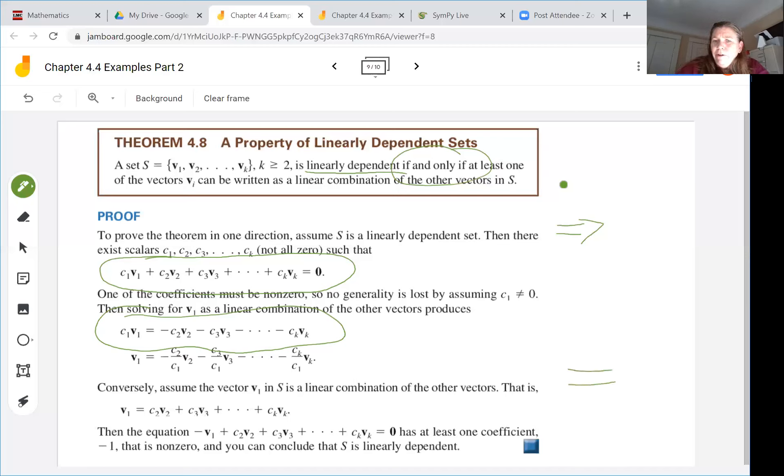So now we're going to go in the other direction. We're going to assume the vector V1 is a linear combination of all the other vectors. So we're able to say V1 equals some combination of the other vectors with scalars C2 through Ck and it's arbitrary that we chose vector 1, it could be any of these vectors and the same principles would hold.